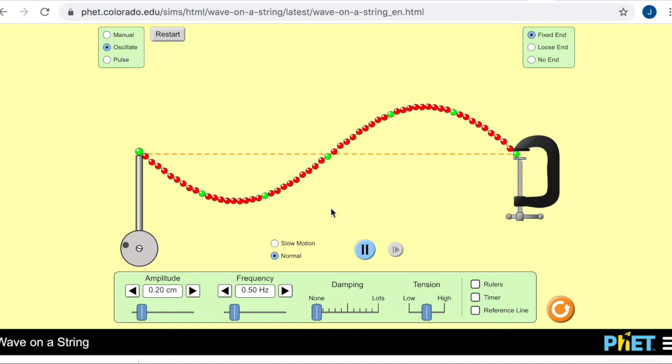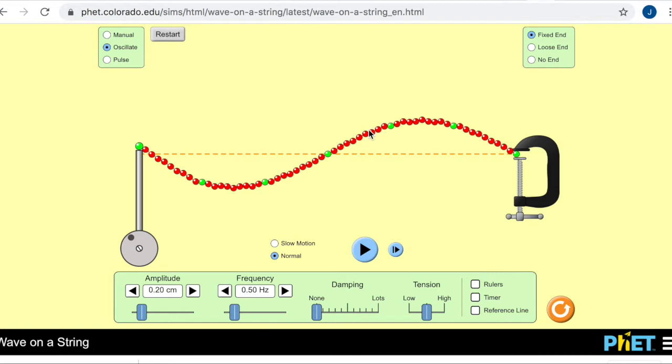There we go. We see that node developing right in here, creating our standing wave. And let's pause it. And here we have one full wavelength.